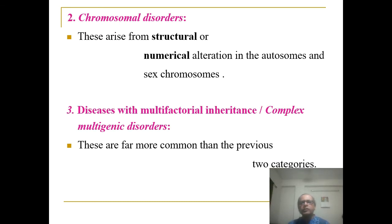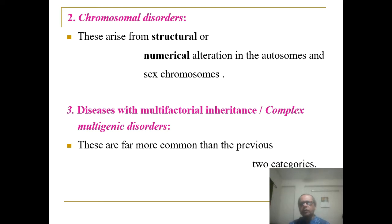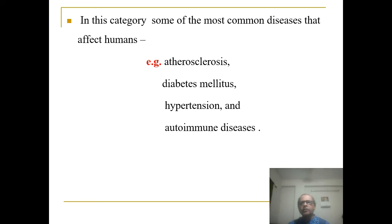Chromosomal disorders arise from structural and numerical alterations in the autosomes or sex chromosomes. Diseases with multifactorial inheritance, that is complex multigenic disorders, are far more common than the previous two categories. They are usually caused by interaction between multiple variant forms of genes and environmental factors. Such variations in genes are common within the population and are also called polymorphic. In this category are some of the most common diseases that affect humans, such as atherosclerosis, diabetes mellitus, hypertension, and autoimmune diseases.